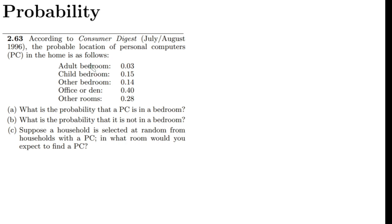These are basically some probable locations in a home and the probability of the availability of the PC. In adult bedrooms it is 0.03, in child bedroom it is 0.15, and in other bedrooms it is 0.14.